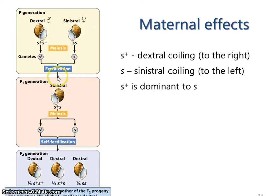Now if this individual is actually heterozygous, when it is making its eggs and putting transcripts in, it's going to be putting in the dominant transcript. We're assuming that the recessive S means there's just a lack of production of a transcript, or that whatever transcript is produced is non-functional, or at any rate it is masked by the dominant transcript. So eggs of this individual are always going to contain the dominant transcript, and as a result all of this individual's offspring are going to be dextrally coiled regardless of what their own genotypes are.